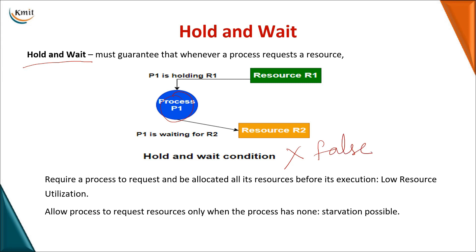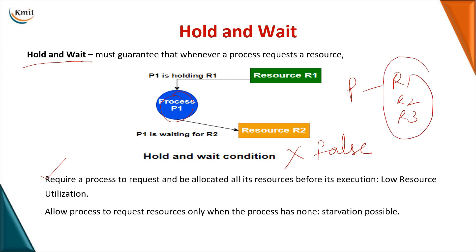If we don't want hold and wait, we have two options. In the first option, if process P requires resources R1, R2, and R3, before starting the operation it acquires all required resources and then releases them once finished. In the second option, whenever a process wants a new resource, it must release the resources it already holds and then request the new one.